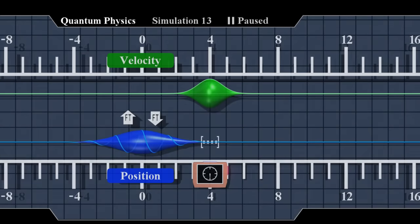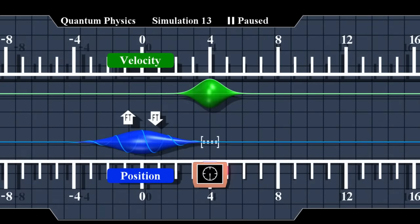We'll now run our simulation again, this time showing both wave functions. When the position wave function collapses, the velocity wave function will snap as well, according to the Fourier transform.